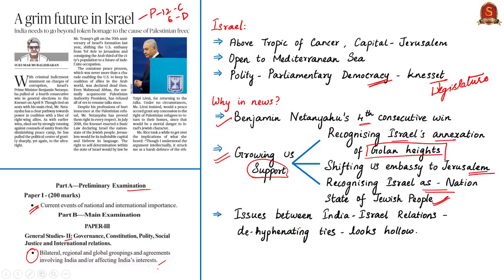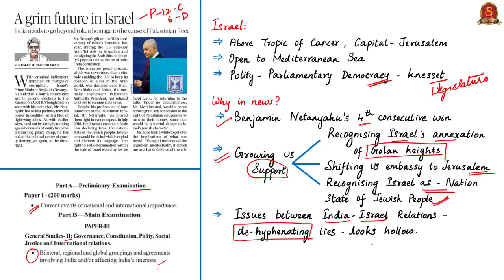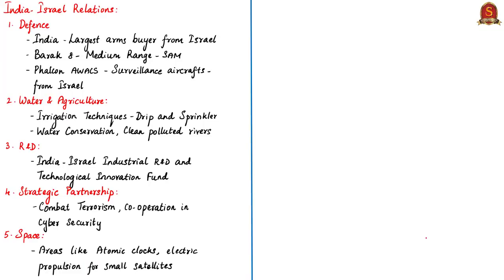In this context, the author highlights in the news article a few issues in India-Israel relations, despite increasing collaboration. Mainly, it is with respect to the policy of dehyphenation which India follows with respect to Israel-Palestine. India has been supporting the cause of Palestinian freedom from the time of Gandhi, and this continues to gain strength especially under the growing US support to Israel. Thus, India's policy to dehyphenate Palestinian freedom from India's relations with Israel increasingly becomes hollow in this context. India and Israel have a robust defense relationship — India is the largest arms buyer from Israel.